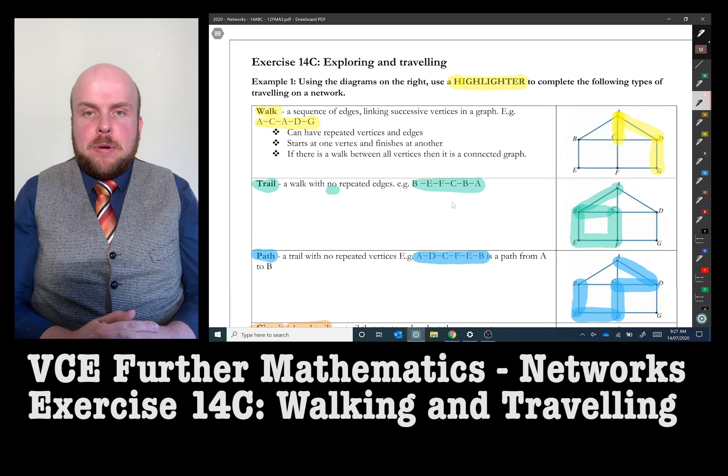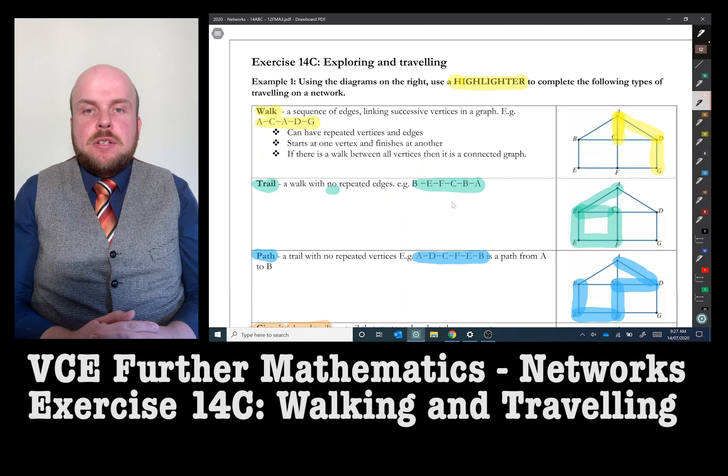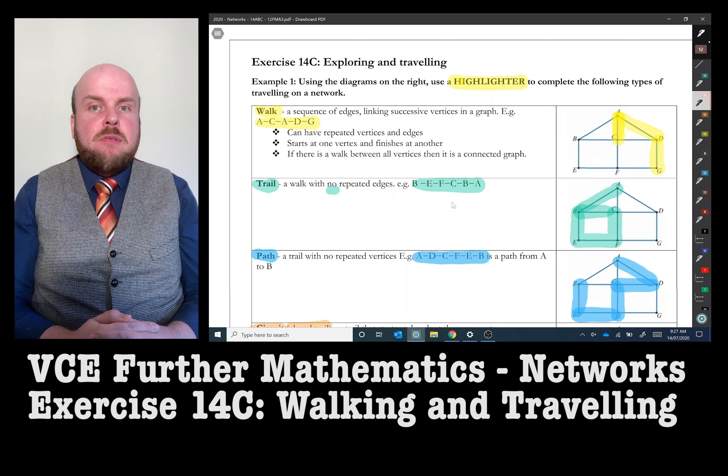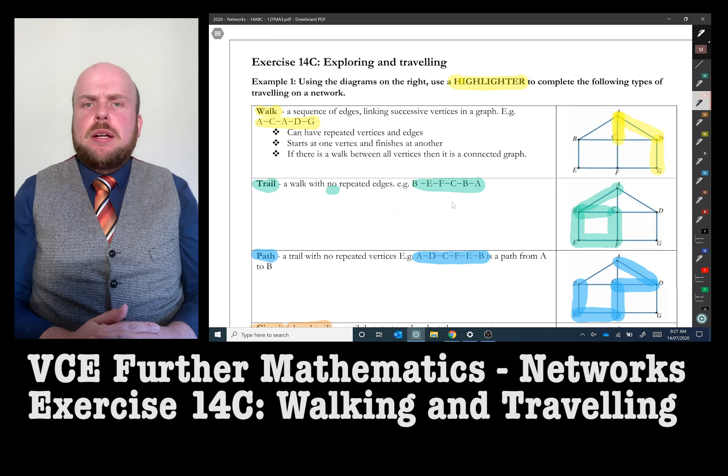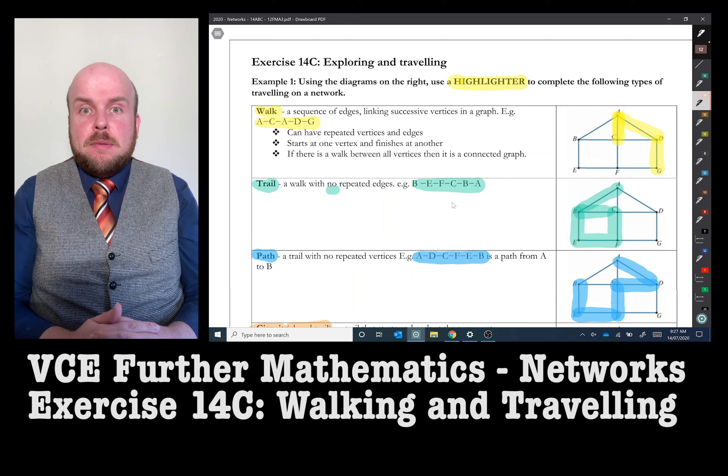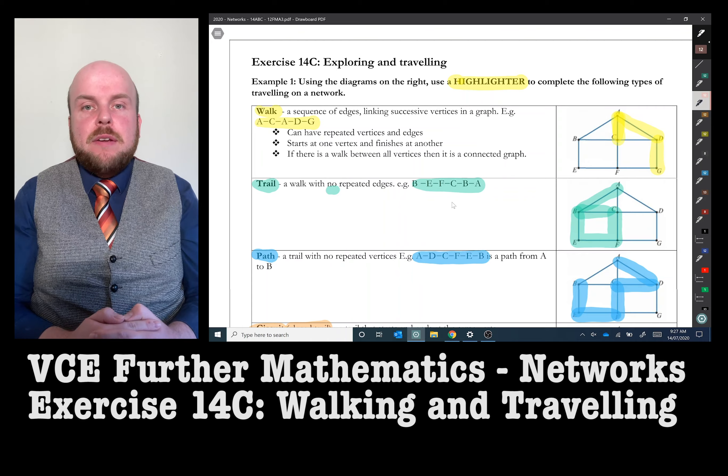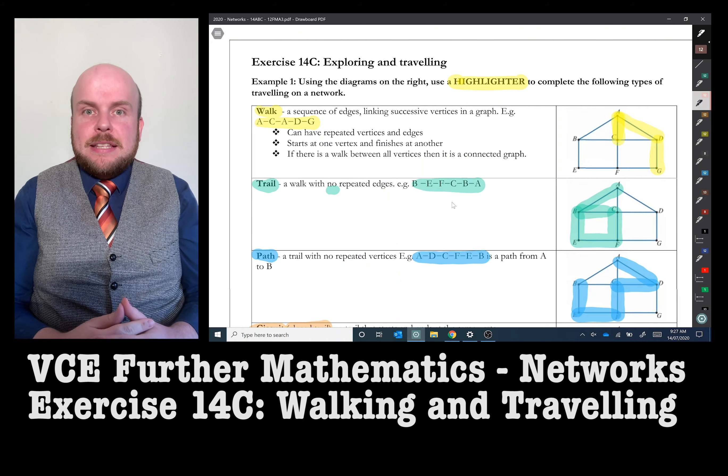Exercise 14c, Exploring and Travelling. We can use a network graph to show a path or a trail or a walk from one point to another. But what does a trail or a path or a walk mean? Well, it means that it's a certain type of set of directions from one vertex to another that has different rules dependent on its name.